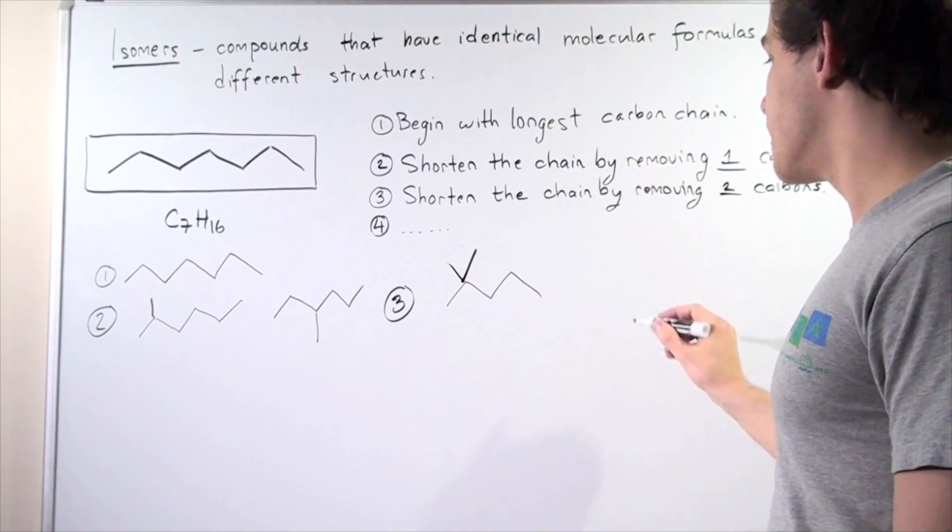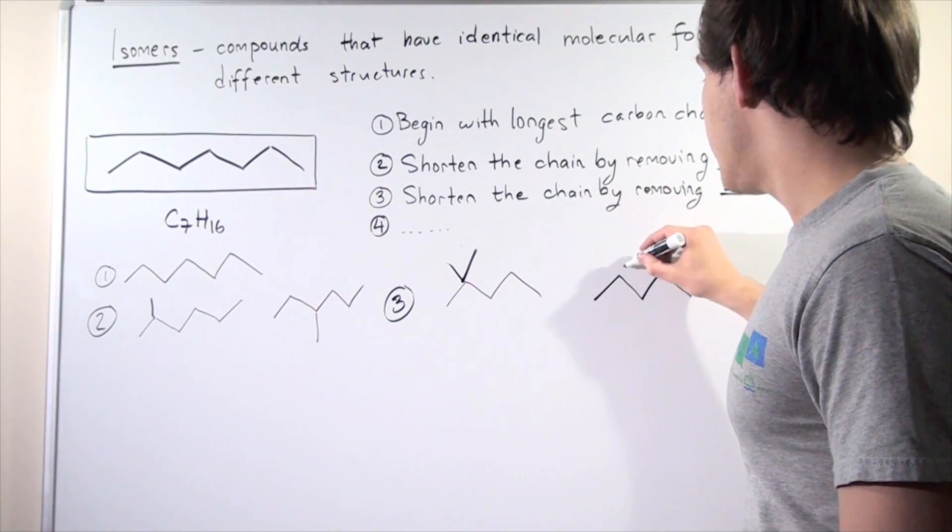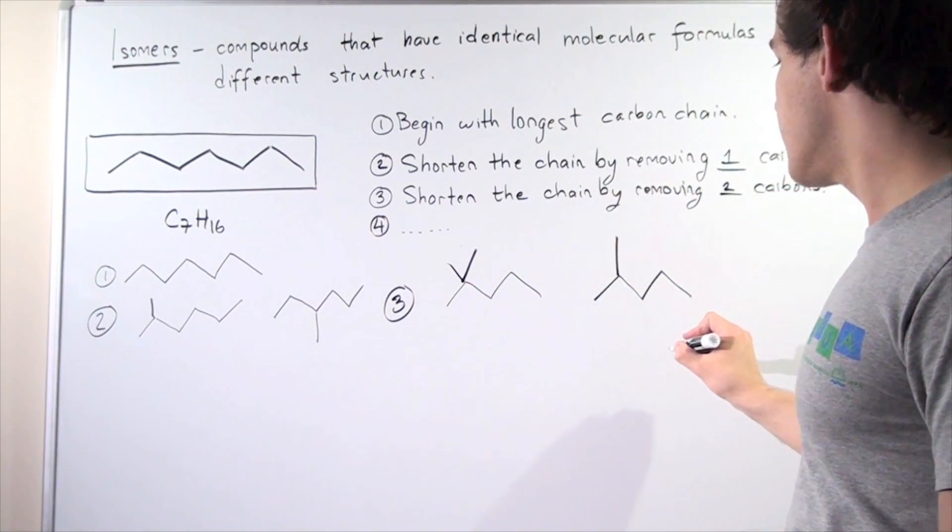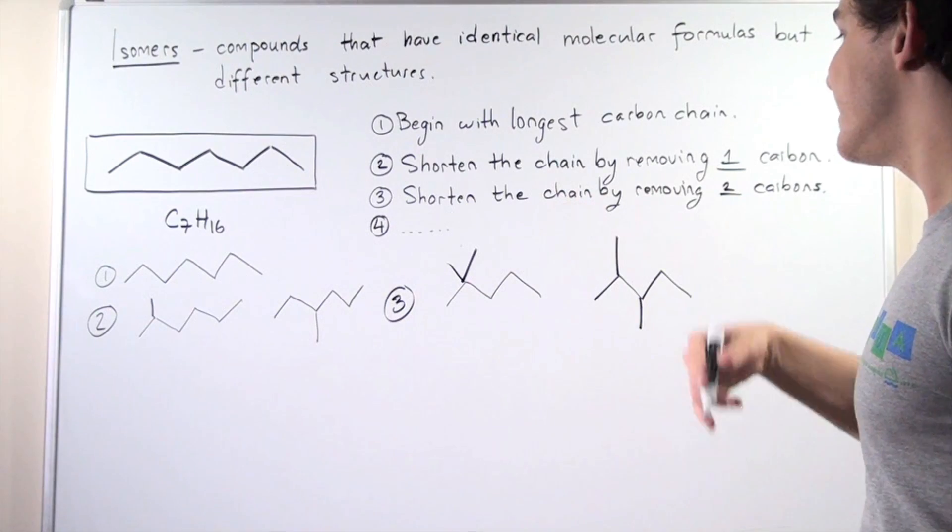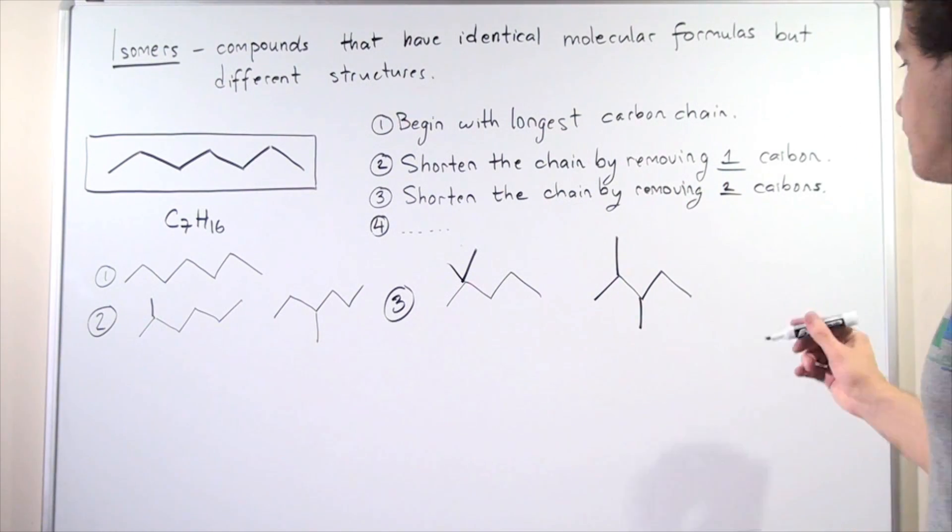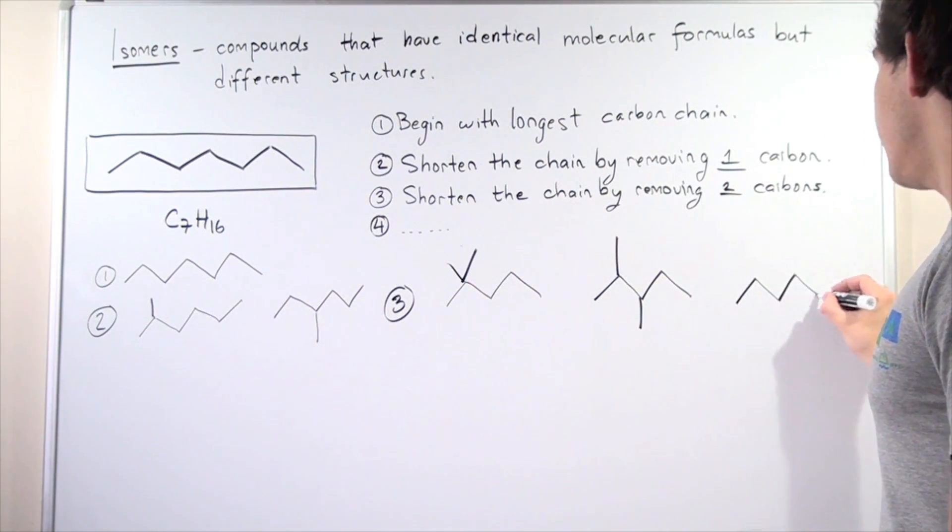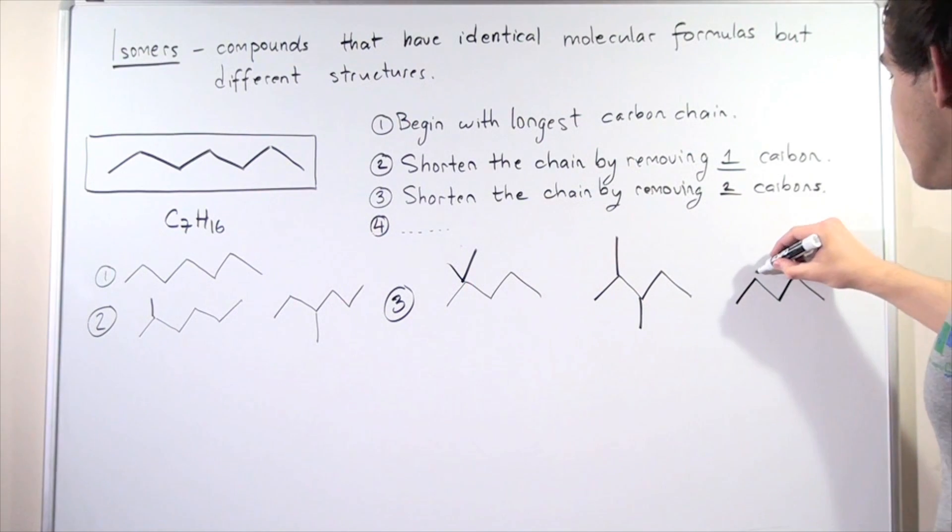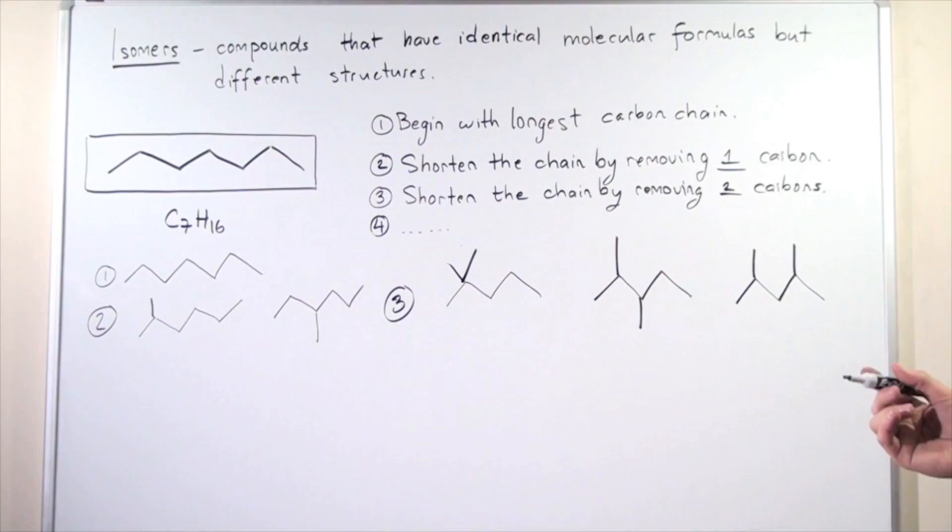So let's first place the two methyl groups here. That's one isomer. Let's draw our pentane again. And I'll take one methyl place it here, the second methyl place it here. That's a second isomer. Let's draw one more pentane. And let's leave this methyl here and place this methyl here. That's yet another isomer.